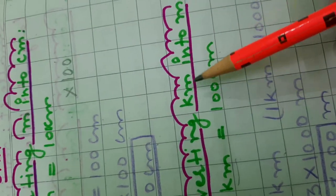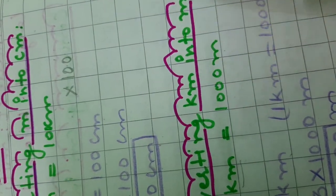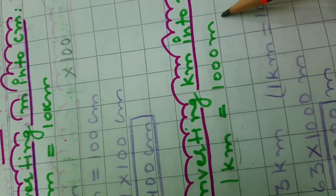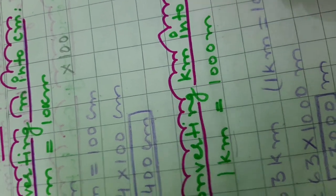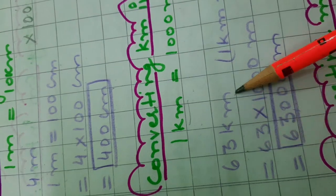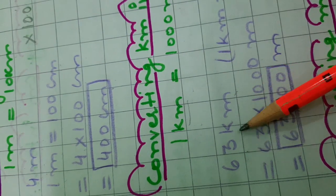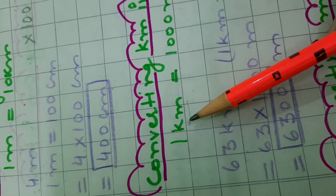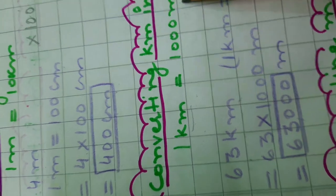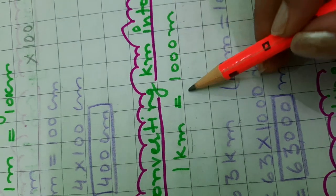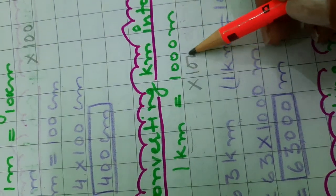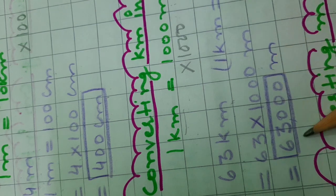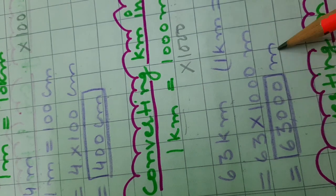Now, let us see how to convert kilometer into meter. 1 kilometer is equal to 1000 meters. Let us take one example: 63 kilometers. To convert 63 kilometers — because we are again converting a bigger unit into the smaller unit — we will multiply it by 1000. So, 63 multiplied by 1000 gives the answer 63,000 meters.